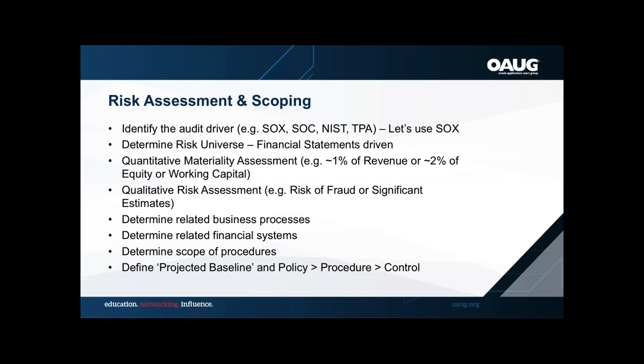Being able to identify all your systems — including underlying and integration systems — is part of defining scope. For example, if you're using an on-prem manufacturing system integrated into Oracle Cloud Financials, the integration layer becomes part of the scope. Making sure you've got the right constituencies involved is equally important. People want to do this in a silo, but those you least expect can provide insight or additional risk mitigation opportunities you hadn't thought about.